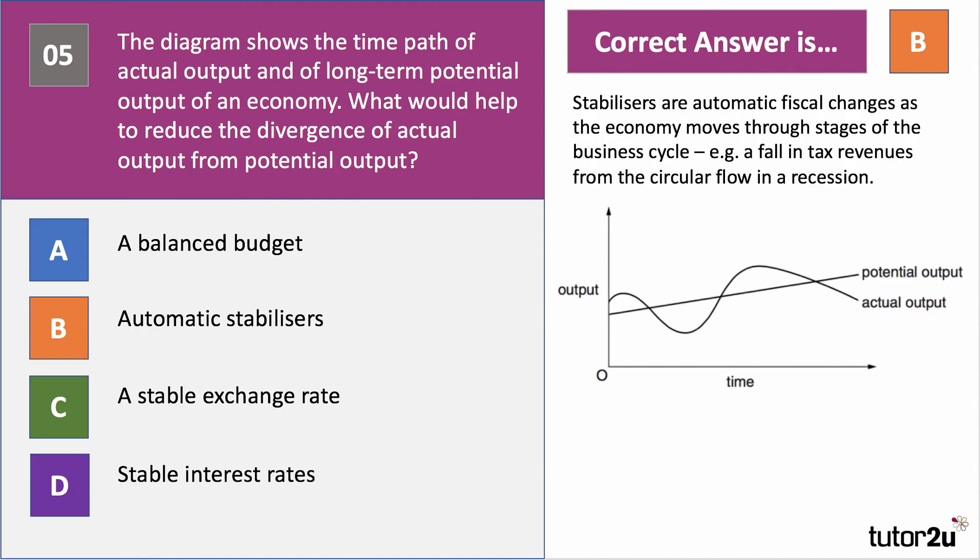Automatic stabilisers are not discretionary — they happen automatically. They're fiscal changes as an economy moves through different stages of the cycle. In a recession, the government takes out less tax from the economy — a fall in leakage — and adds in more government welfare spending, an injection of demand. During a boom, the government takes out more in tax, because most taxes are progressive; people pay more in VAT and income tax, and the government pays less in welfare as real incomes rise. So automatic stabilisers have the effect of reducing the amplitude of the cycle.